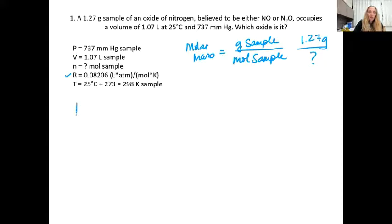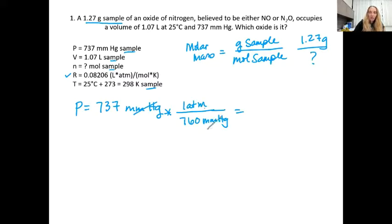So I'm going to rewrite this. My pressure equals 737 millimeters of mercury, and I wrote down all of these have to do with the sample. The R, ideal gas constant, is in liters and atmosphere, so my pressure needs to be in atmosphere. So I'm going to convert this millimeters of mercury into atmospheres. Millimeters of mercury cancel with millimeters of mercury, and I'm left with atmospheres. And this gives me 0.9697 atm.